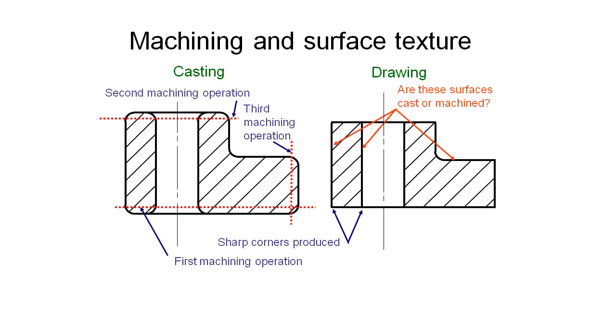You can imagine now the problem: we have this drawing and we can see that there's a radius in here. Usually when you see radiuses like this in corners on an external surface, you think that maybe this part has to be either forged or cast. It's very difficult to machine those corners otherwise. So we want to be able to communicate to the person manufacturing this which of these faces we actually require to be machined.